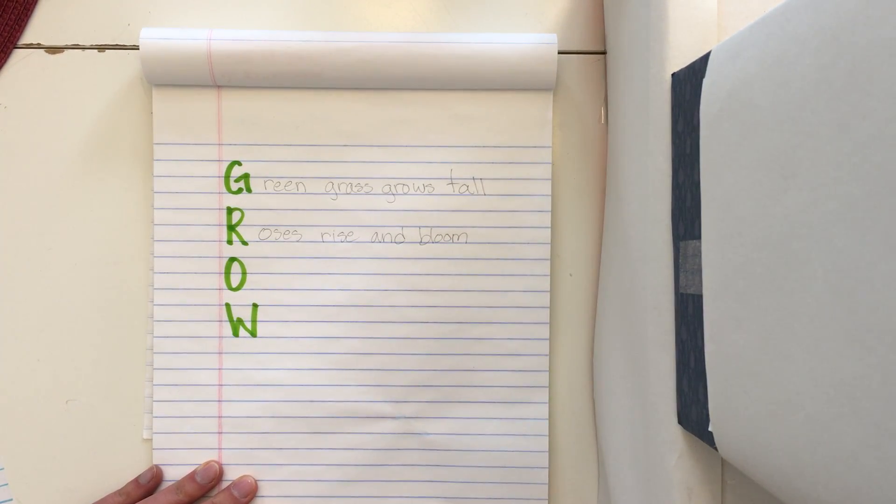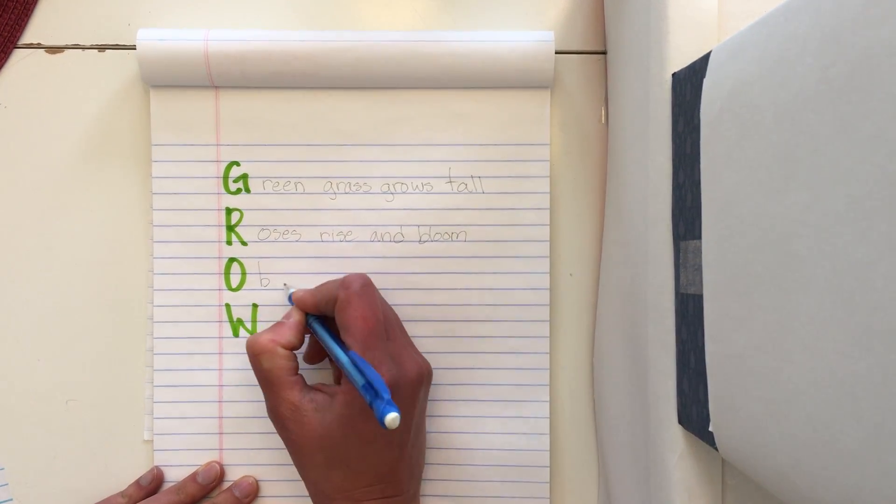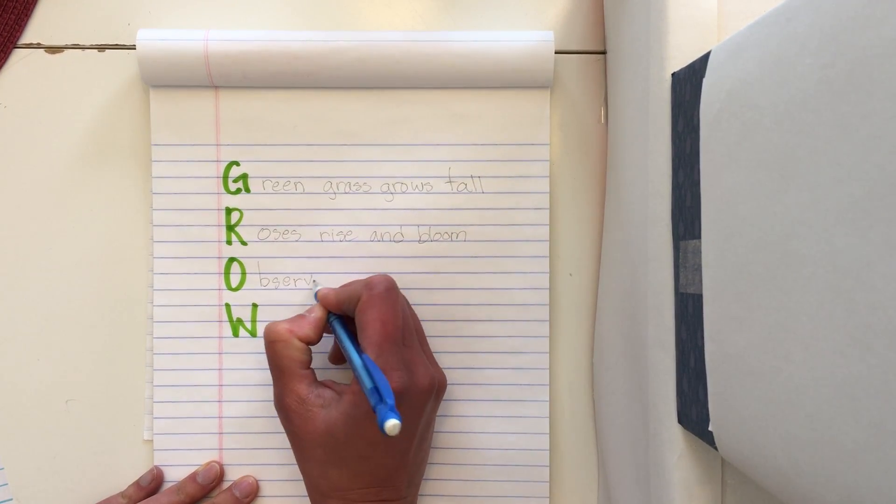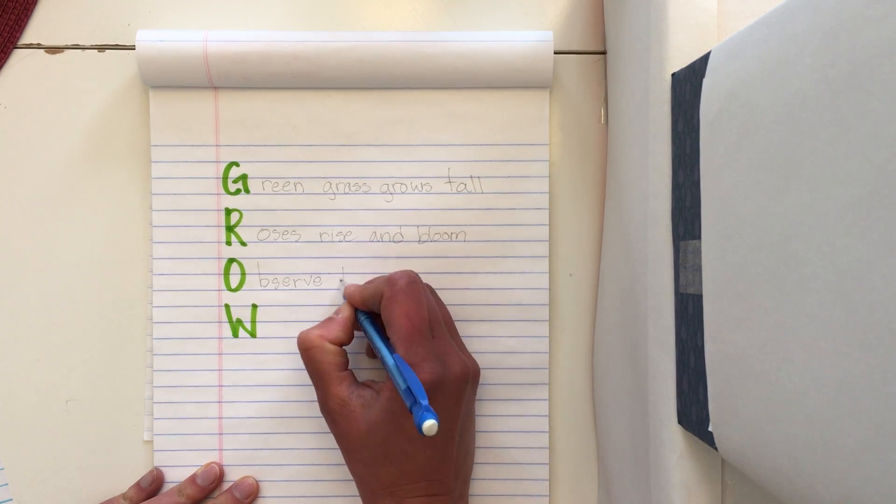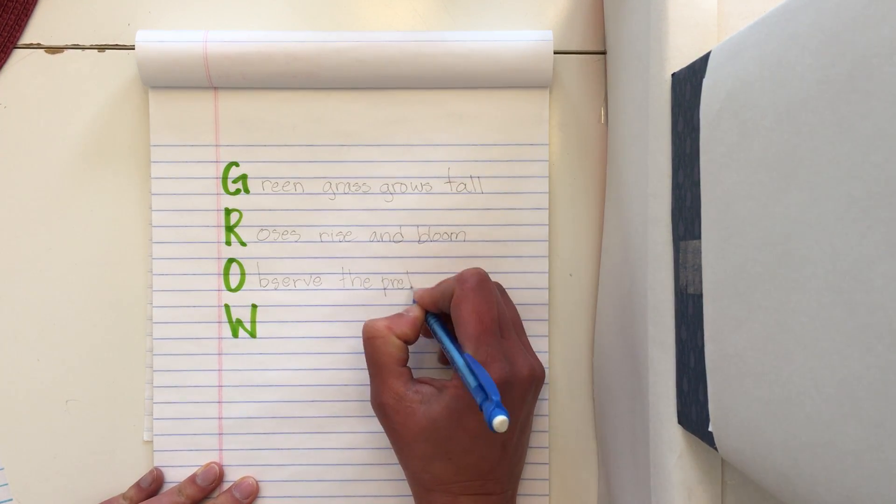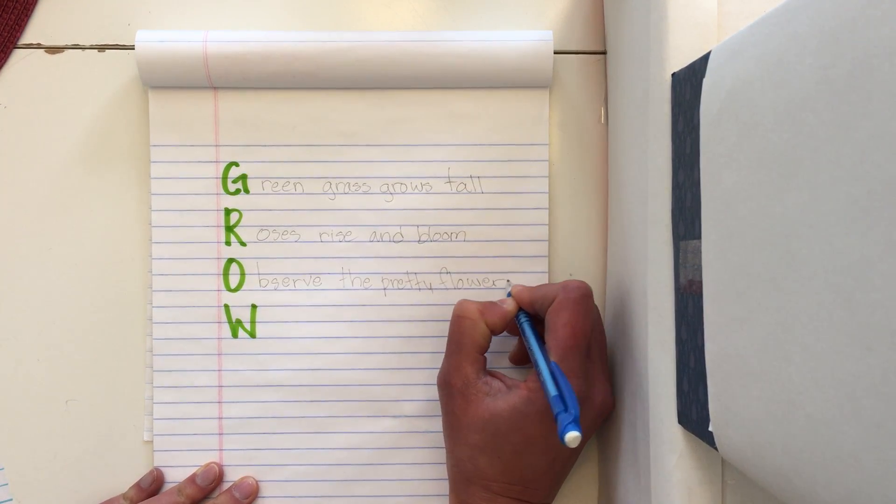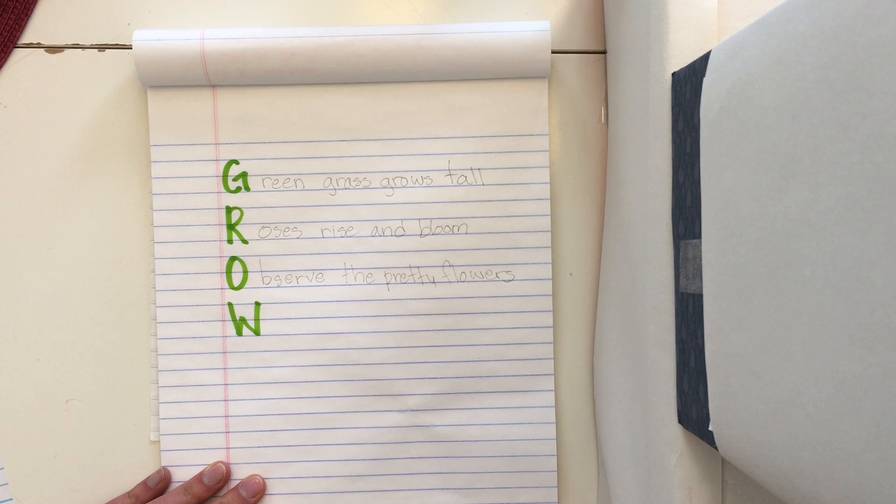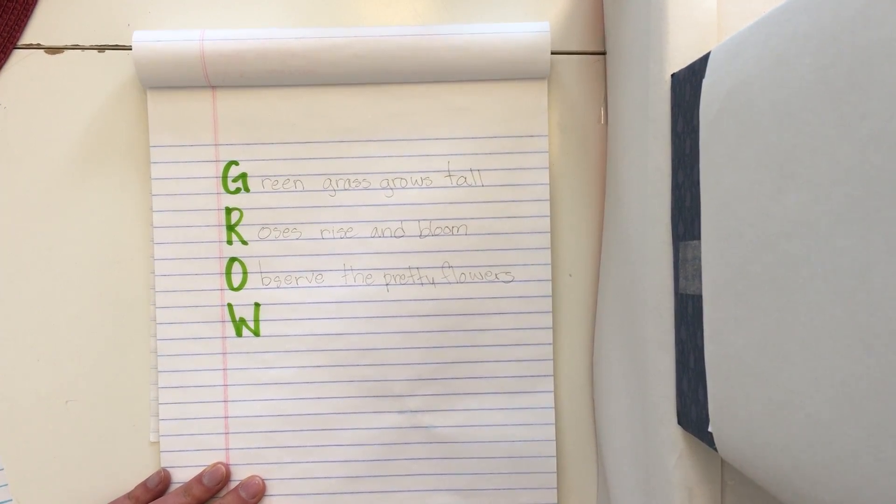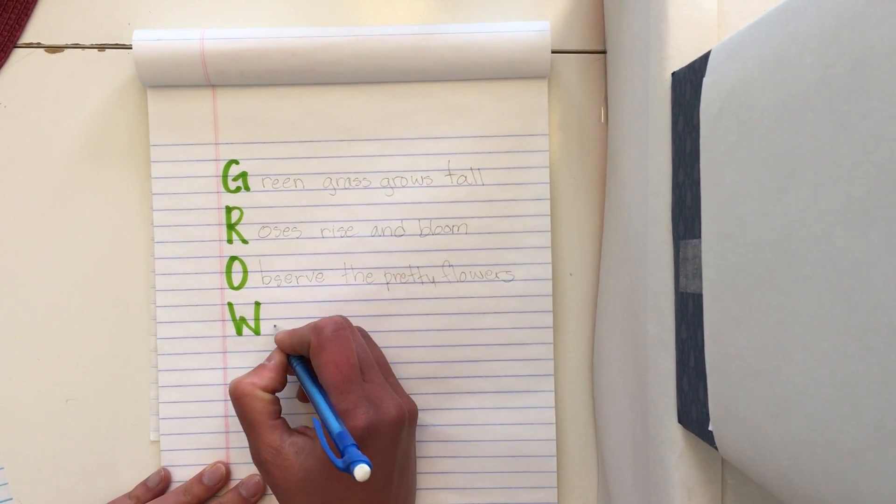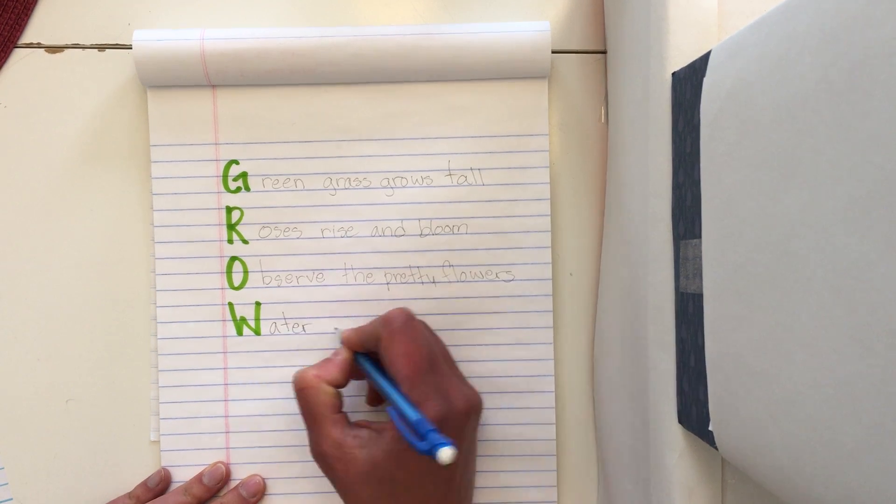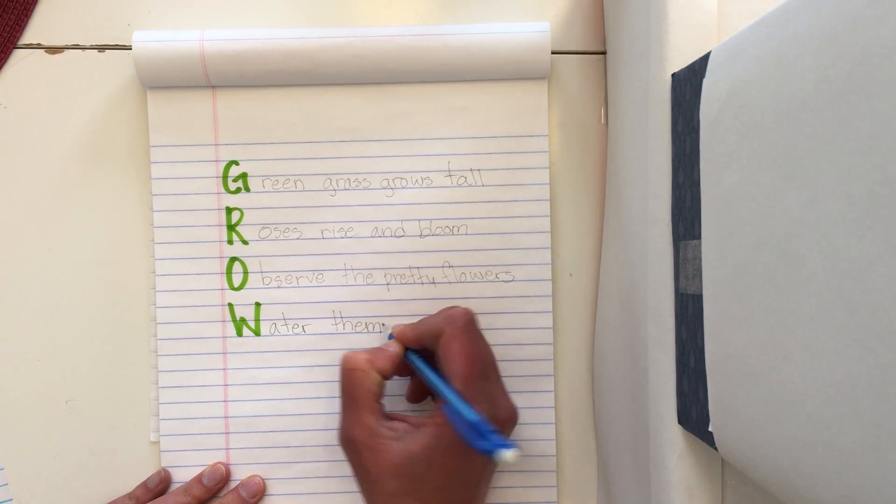O. What do you do? Well, if you watch things. What's a fancy word for watch? Observe. So why don't we do, you observe or watch the pretty flowers. And then a W. What do you have to do with flowers? What? That's silly. You water them too.